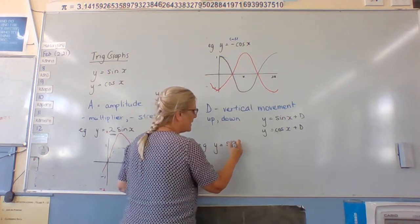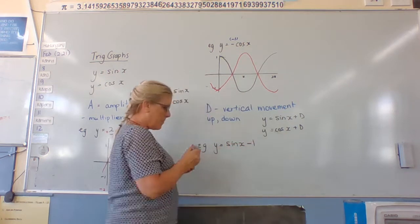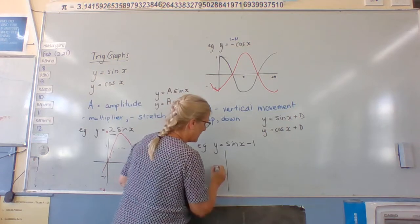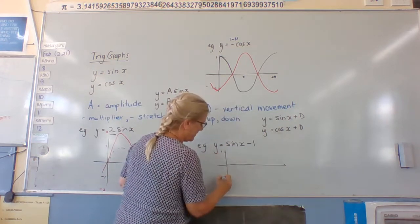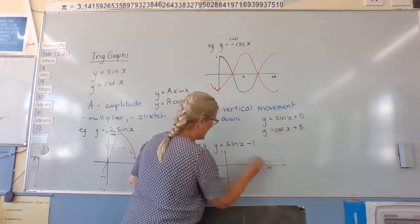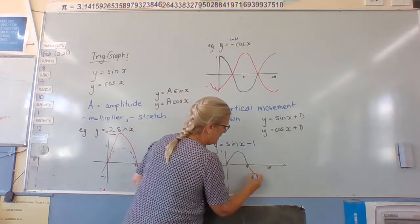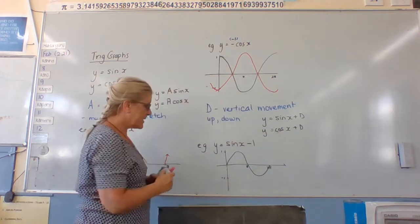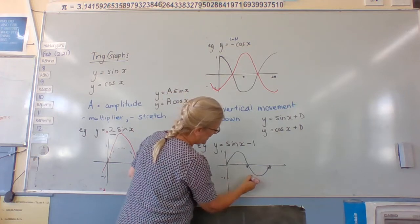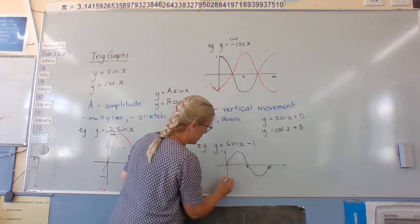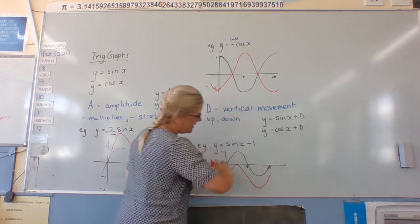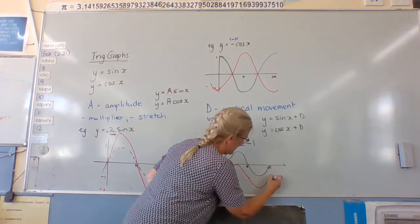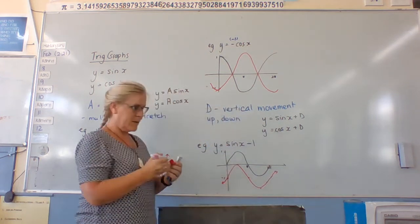So y equals sine x minus one — minus one means we go down. We take our original graph with values at one, negative one, pi, two pi — the standard sine shape going up and down. We pull the whole thing down one unit. So the top is now at zero, the bottom at negative two, and we draw through those shifted points, evenly spaced all the way through. It continues, going up and back down again — it doesn't stop.